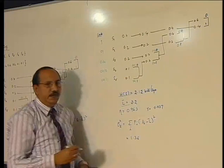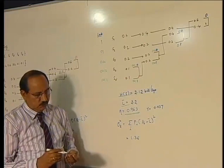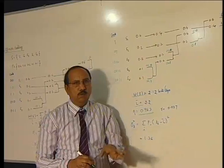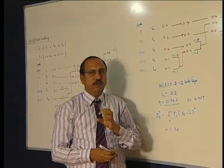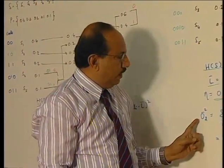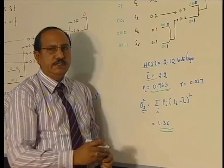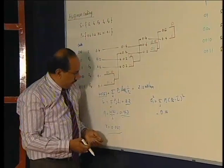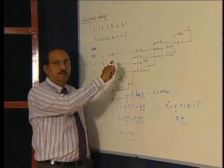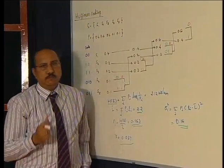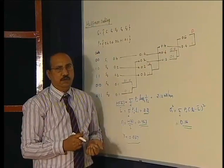For this second case, L-bar is the same as in the previous case: 2.2. The efficiency also remains the same. So the question is: what is the difference between keeping the added probability high or low? For that we observe the codeword variance — how much we deviate from the mean value. In communication, we always look for a code with minimum variance. Applying the formula P(i) times (L_i minus L-bar) squared, the variance in case 2 comes to be 1.36, whereas in case 1 it comes to be 0.16. Therefore, whenever we get equal probabilities, keeping the added probability as high as possible minimizes the variance. Make it a practice: whenever equal probabilities occur, keep them as high as possible to minimize variance.